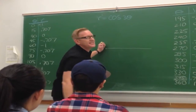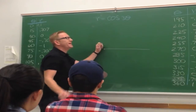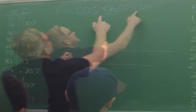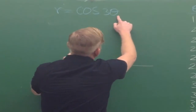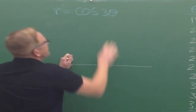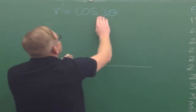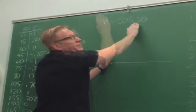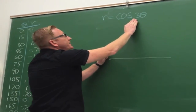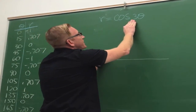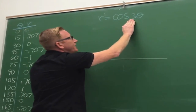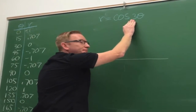We're graphing these guys. This is a rose — I know it's because there's three theta. When it's odd, I'm gonna have three petals.